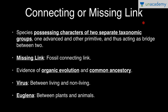Connecting or missing link. Species possessing characters of two separate taxonomic groups — one advanced and the other primitive — and thus acting as a bridge between the two taxonomic groups are known as connecting links. If a connecting link is a fossil, then it is known as a missing link. It is good evidence of organic evolution and common ancestry.